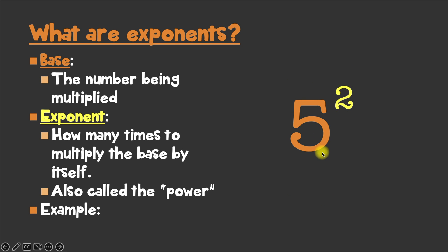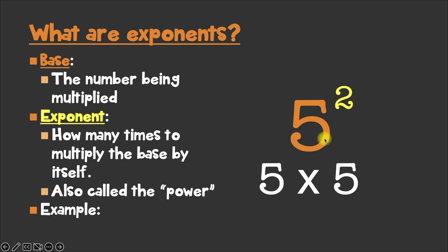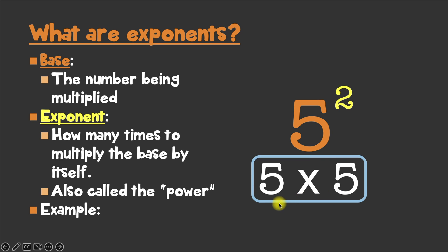The way you would read this is 5 to the second power. But what exactly does this mean? Well, what it really means is 5 times 5, because the exponent 2 is telling you how many times you're multiplying the base 5 by itself. 5 is the base — that's the number we're using — and 2 is the exponent, which tells us how many times we're multiplying it.